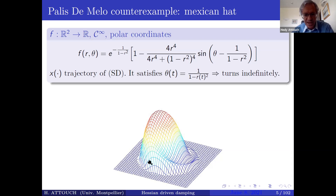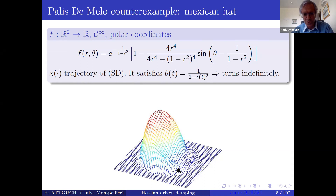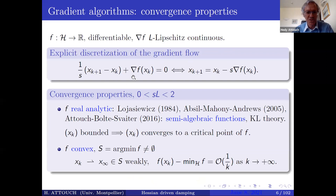A famous counterexample by Palis and de Melo, known as the Mexican hat, shows a function from R² into R described in polar coordinates whose gradient descent trajectory turns infinitely around the base of the function. Specifically, when the radius r approaches 1, the angle θ goes to infinity. So one must make a geometric assumption to obtain convergence. In the discretized gradient system, to preserve nice convergence properties, the step size s must be less than 2/L, where L is the Lipschitz constant of the gradient, and one obtains analogous results.